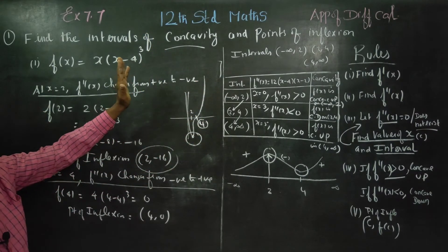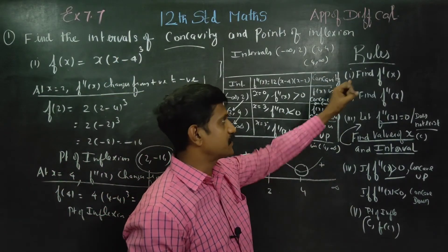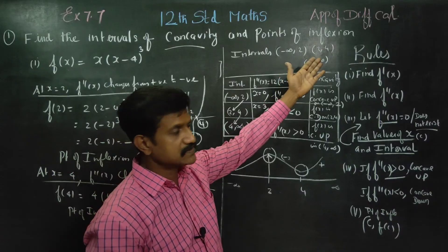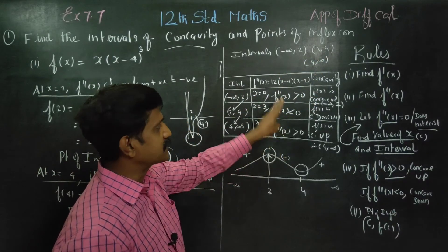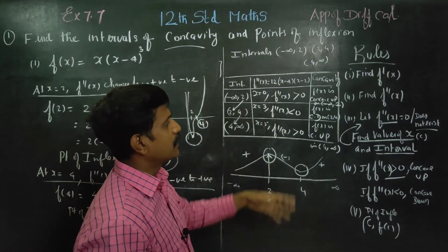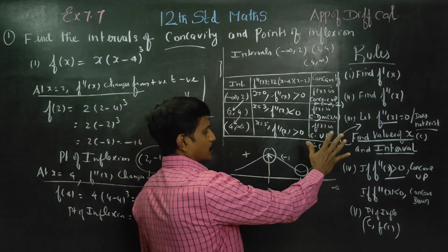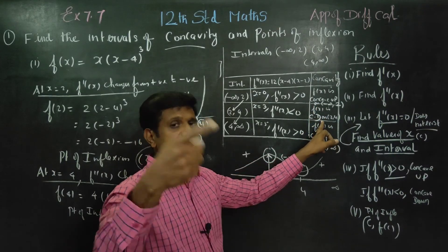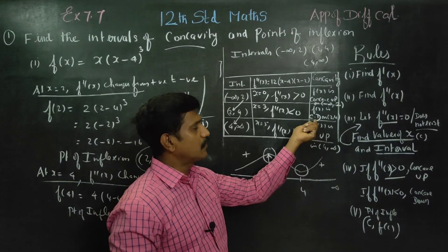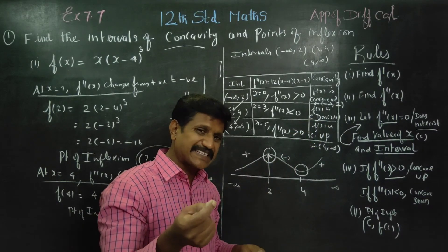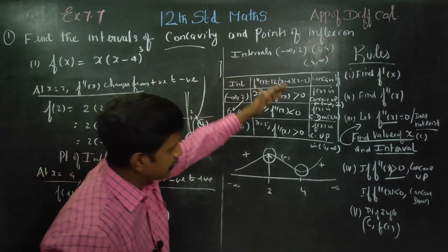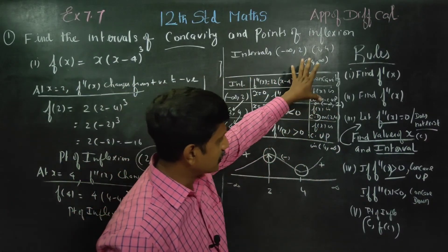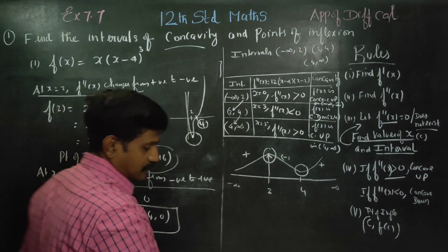To summarize: set f''(x) = 0 and find the values of x. After finding the values of x, find the intervals and substitute into f''(x) — this is the second derivative test. Positive means concave up, negative means concave down. The points of inflection are (2, −16) and (4, 0). Thank you.